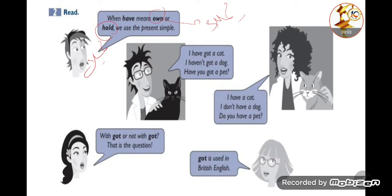Should I say 'I have a cat' or 'I have got a cat'? Should I say 'I don't have a dog' or 'I haven't got a dog'? When we use 'got,' this is British English. British people use 'have got' or 'has got' — for example: I've got a cat, I've got a car, have you got a pet? In American English, we use 'have' as a main verb with do/does/don't/doesn't for questions and negatives.